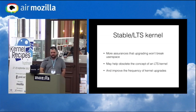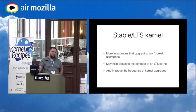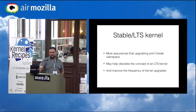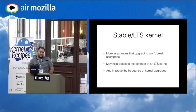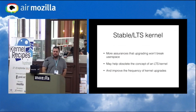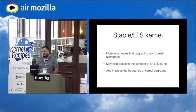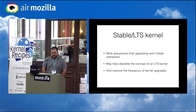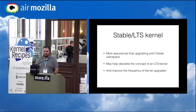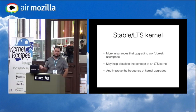The stable and LTS kernel trees — I'm hoping to cure the need for them in the future, at least the LTS tree. Right now we promise we won't break the kernel and we'll never break user space applications, and yet we have stable and long-term stable kernel trees, which is basically an admission that we're not great at not breaking code. If we provide a kernel ABI tree, we could give distros some guarantee saying we didn't break your code this time.